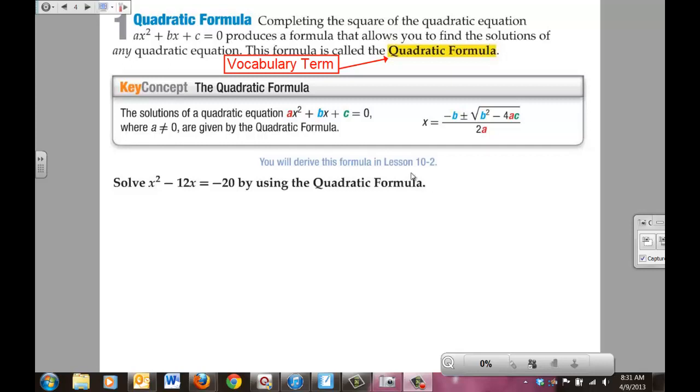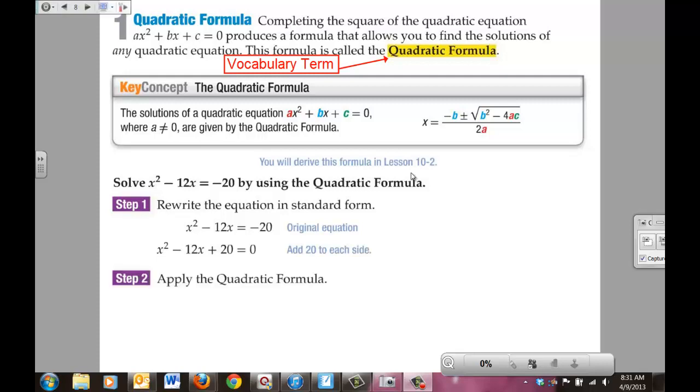Solve x² - 12x = -20 using the quadratic formula. The first thing we're going to do is rewrite the equation in standard form. We're going to take that -20, add 20 to both sides, and now we have it in standard form.